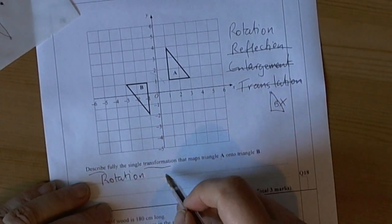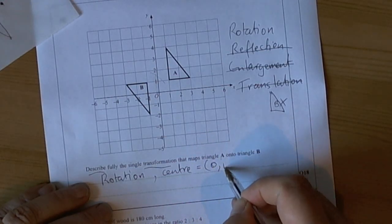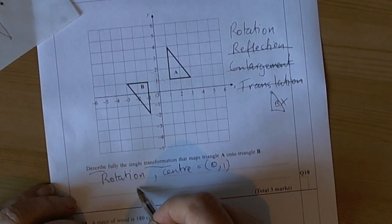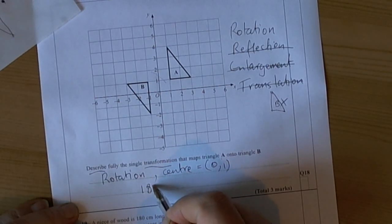So because rotation requires you to define the center, then we say the center is at coordinate. And you also need to say the angle of rotation. And we can see from the way it works, it had to turn around at 180 degrees.